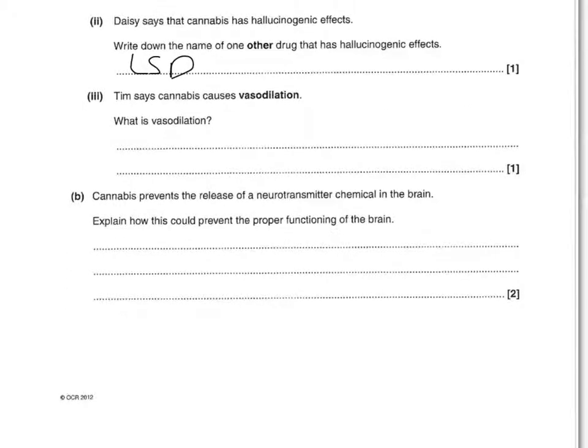Cannabis prevents the release of neurotransmitter chemicals in the brain. Explain how this could prevent the proper function of the brain — two marks. You get one mark for saying there's less neurotransmitter or chemical to bind with the next neuron. Then you say that could prevent nerve impulses passing from neuron to neuron across the synapse. One mark for less neurotransmitter binding, one mark for preventing nerve impulses passing neuron to neuron, and a mark for saying that's across the synapse — you just need any two of those.